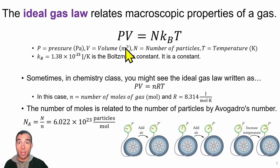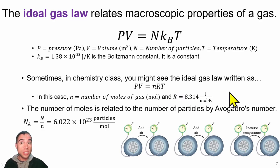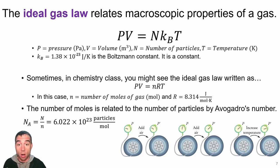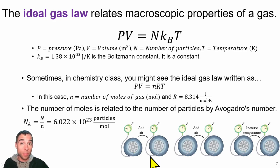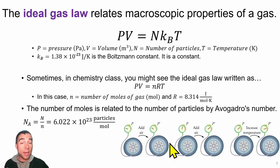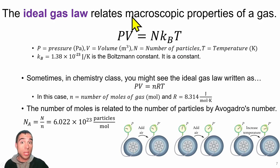We'll mostly stick with the physics version of the ideal gas law. It helps us understand why pressure changes for different volumes, temperatures, or amounts of gas. For example, a flat tire has low pressure. Adding air increases the number of particles N, raising the pressure until the tire is inflated. Adding even more air increases pressure further. If temperature increases, pressure also increases — which is why tire pressure drops in winter when temperatures are lower.